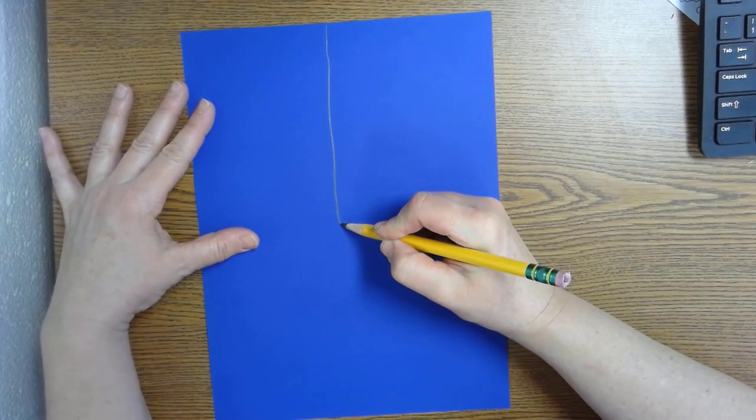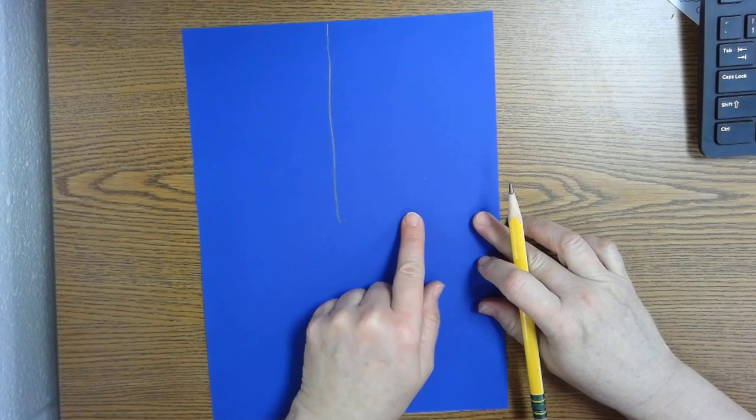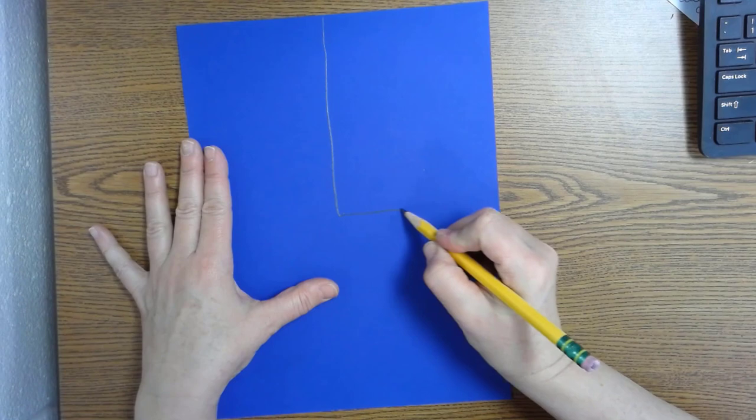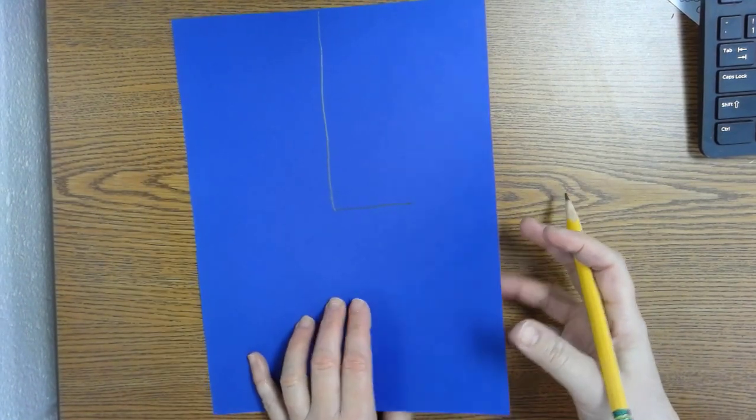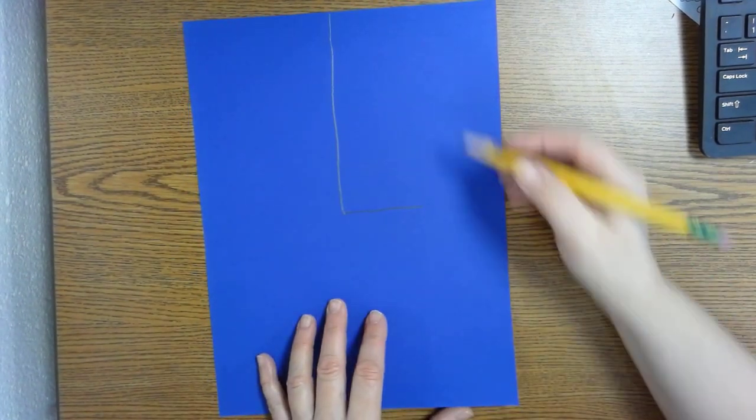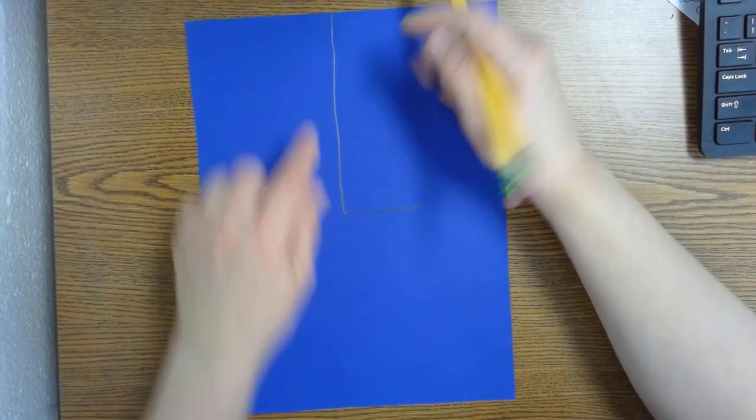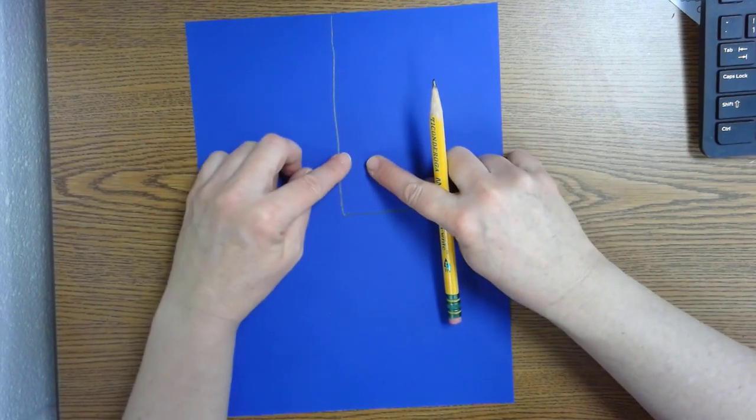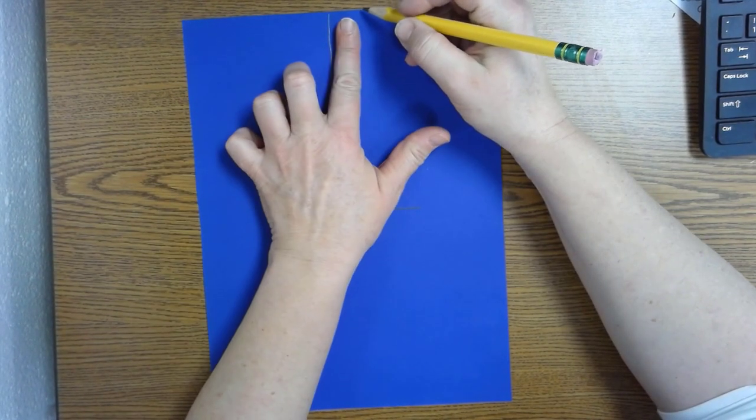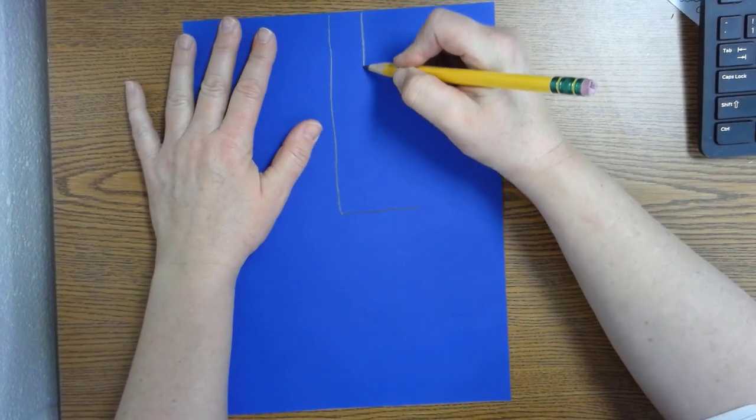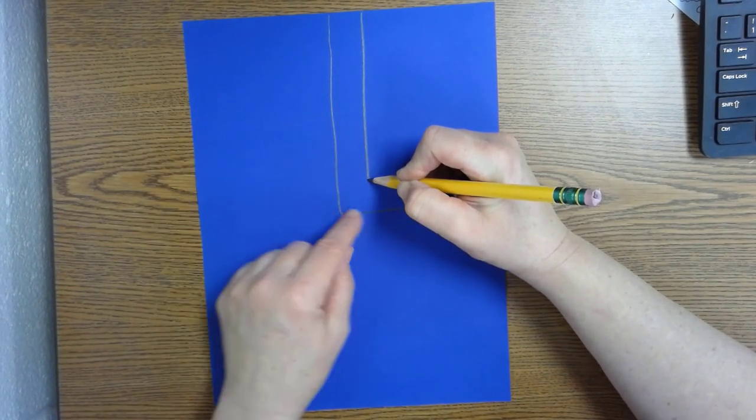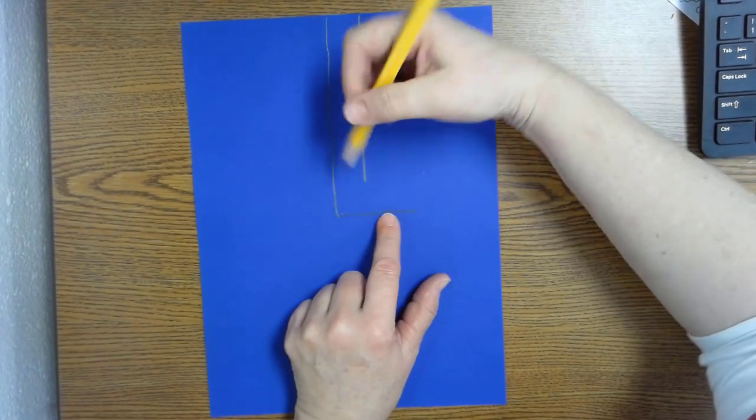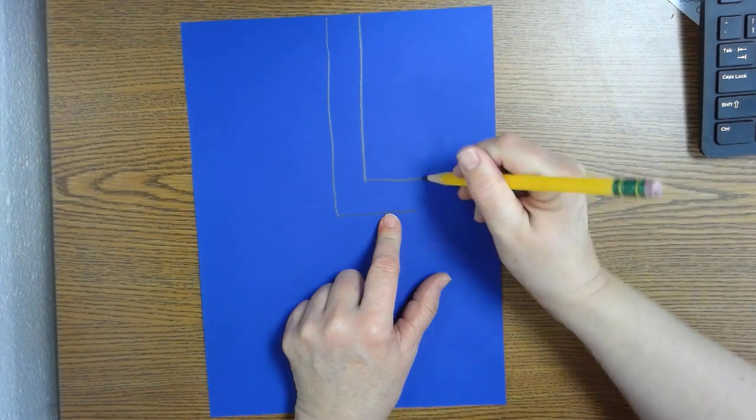Then we're going to go across, but we're only going to go about halfway. Should look like you have a giant L. And then you're going to go back up to the top. We're going to do a little bit smaller L. We want to have some space though, because when you do glue, the glue can spread a little bit. So you don't want to put it too close. And be sure to stop before you get to the bottom line.